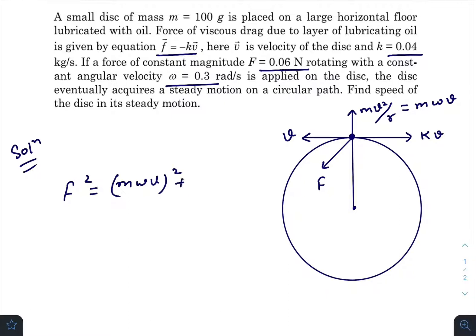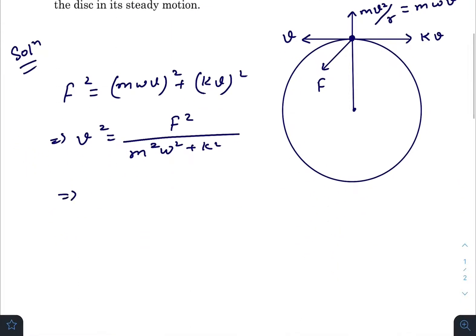This gives you V squared equals F squared divided by M squared omega squared plus K squared. So the speed at steady state will be F divided by the square root of M squared omega squared plus K squared.